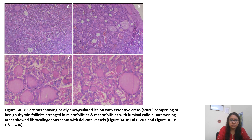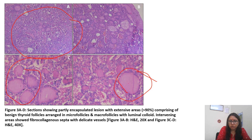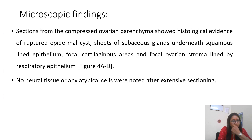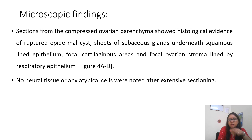This is the microscopic picture. You are seeing sheets of thyroid follicular cells. In the high-power image, individual thyroid follicles are visible, each lined by benign thyroid follicular epithelial cells arranged in a single layer. You are seeing replacement of the normal ovarian parenchyma with these thyroid follicles, which comprised more than 85–90% of the area.